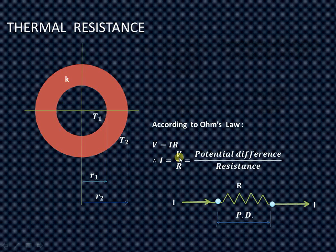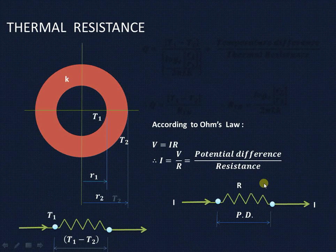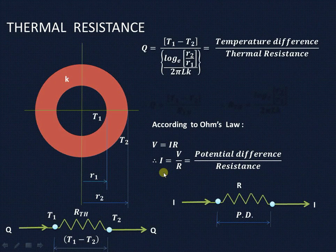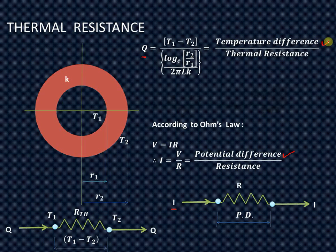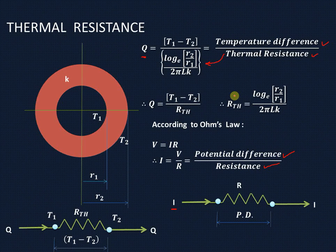V equals IR, or I equals V upon R, where V is the potential difference and R is resistance. The same concept is applied here. In place of potential difference there is temperature difference, current flow is analogous to heat flow, and electrical resistance is analogous to thermal resistance. So Q equals (T1 minus T2) divided by R_th, where the thermal resistance R_th for the hollow cylinder equals log(R2/R1) divided by 2πLK.